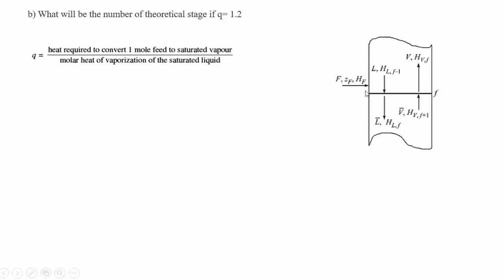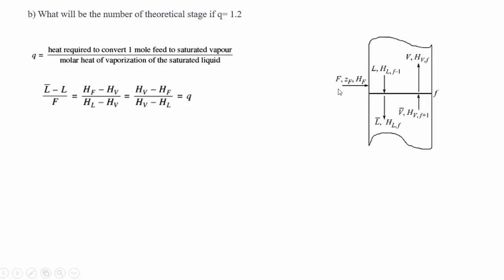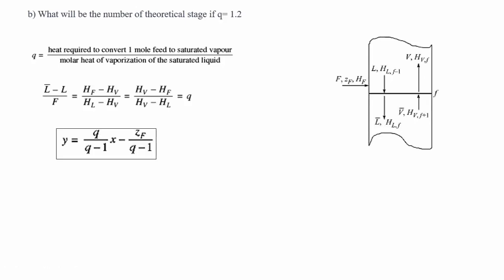So this is the feed line and this is the feed tray. You have some liquid entering from the top to the feed tray, and it passes the feed tray in addition with the feed. Based on this, you can derive the equation for the Q value — the amount of liquid in the stripping section minus the amount of liquid falling from the top, divided by the amount of feed. You can also use the latent heat for the vapor, the feed, and the liquid.